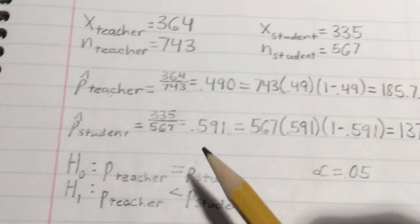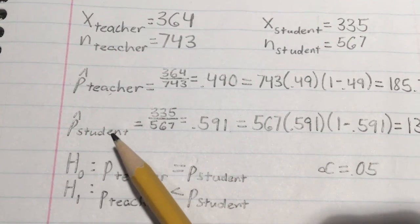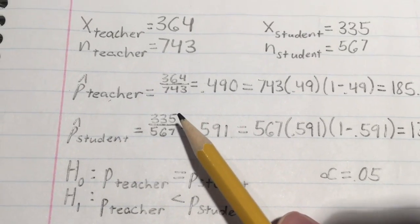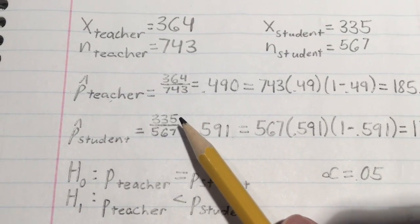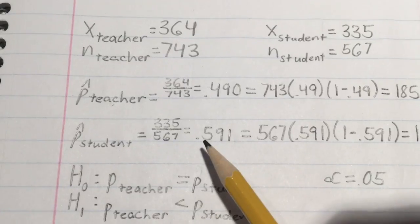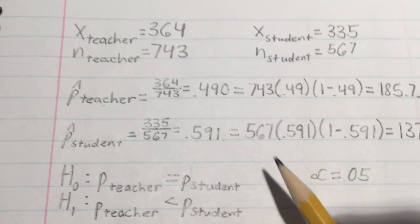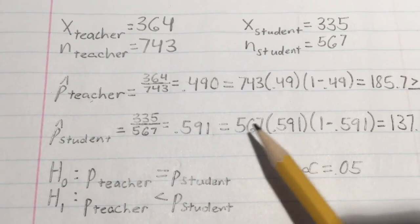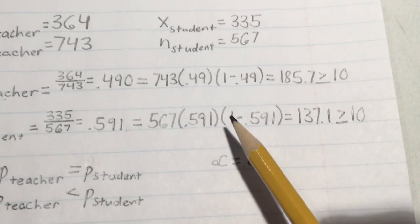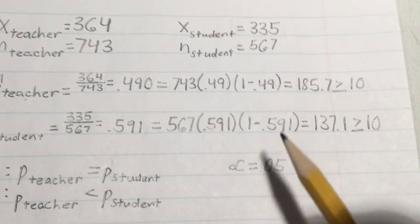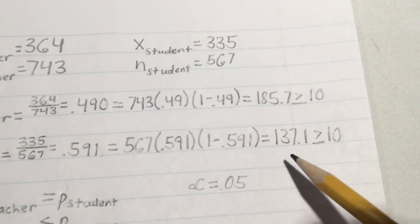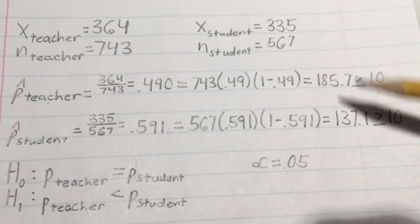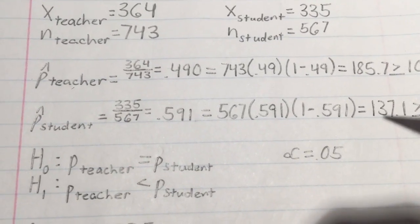For the student sample proportion, we would do the same thing: 335 divided by 567 to get 0.591. We would again multiply the population by the sample proportion multiplied by 1 minus the sample proportion to get 137.1, which is greater than or equal to 10.